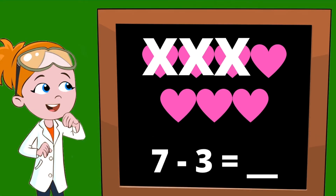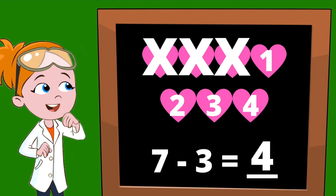Now, we need to count how many hearts are left. 1, 2, 3, 4. 4 hearts are left, so our answer is 4. 7 minus 3 equals 4.